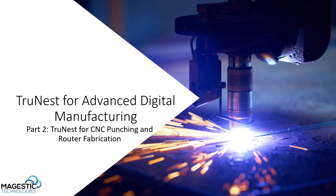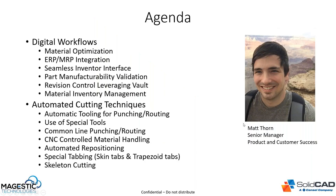Today is part two of the TruNest Advanced Digital Manufacturing Webinar Series. We're going to cover punching and router fabrication for sheet metal applications. Topics include optimizing material usage, integration with MRP and ERP systems, bringing in CAD geometry and bill of materials from Inventor via Vault integration, automatic tooling for punching and routing, special tools, common line routing, repositioning, skeleton cutting, and special types of tabs for both processes.